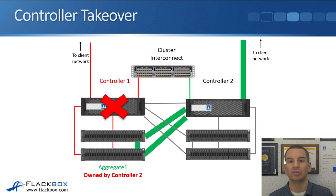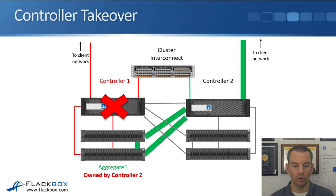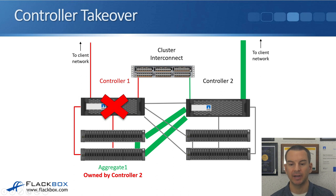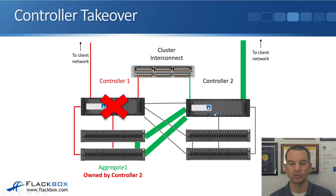Let's say that controller 1 does actually fail. Controller 1 goes down, controller 2 will detect that, and then it will take ownership of controller 1's disks when high availability kicks in. At this point, the SAS connections from controller 2 go active down to those disks where aggregate 1 is. The incoming client connection hits controller 2, and controller 2 accesses the data over its SAS connections going down to the disks.